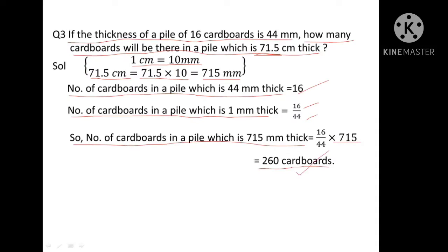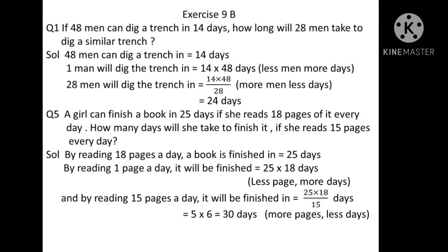Now we will move to Exercise 9B. Exercise 9B is totally based on inverse variation. Inverse variation means the product of two quantities is constant — like A multiplied by B is constant.